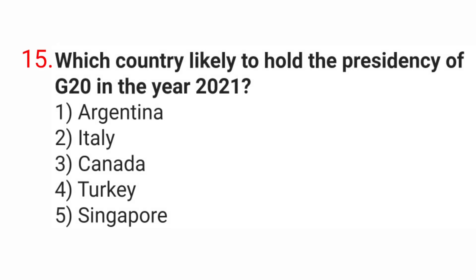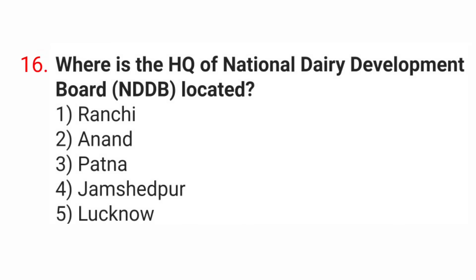Question 15: Which country is likely to hold the presidency of G20 in the year 2021? Options: Argentina, Italy, Canada, Turkey, Singapore. The correct answer is Option number 2, Italy.